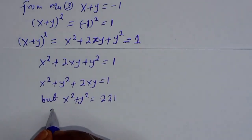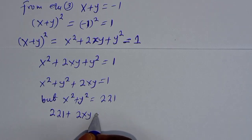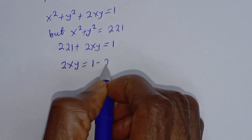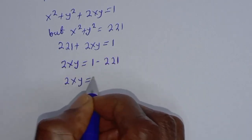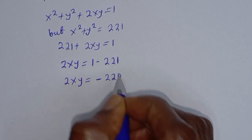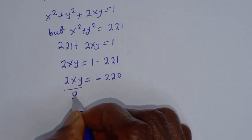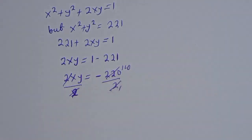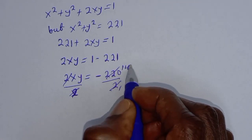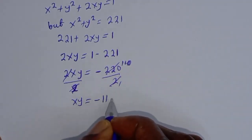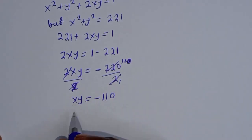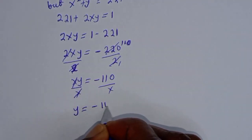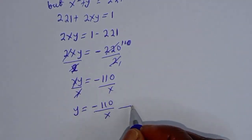Substituting equation 4: 221 plus 2xy equals 1. So 2xy equals 1 minus 221, which gives 2xy equals minus 220. Dividing both sides by 2: xy equals minus 110. Let's call this equation 5. Making y the subject: y equals minus 110 over x.